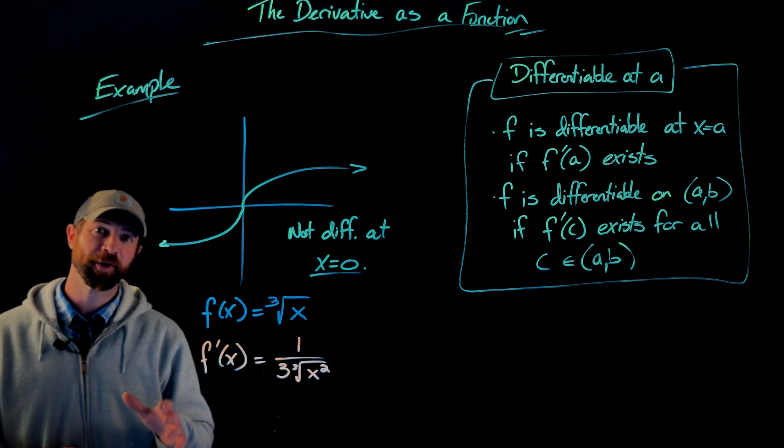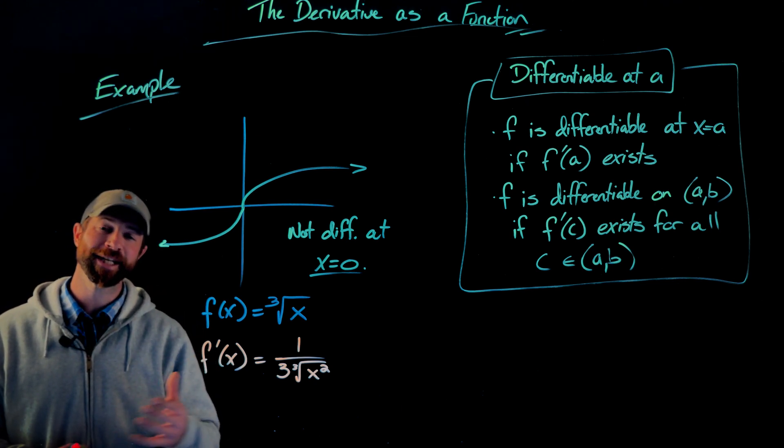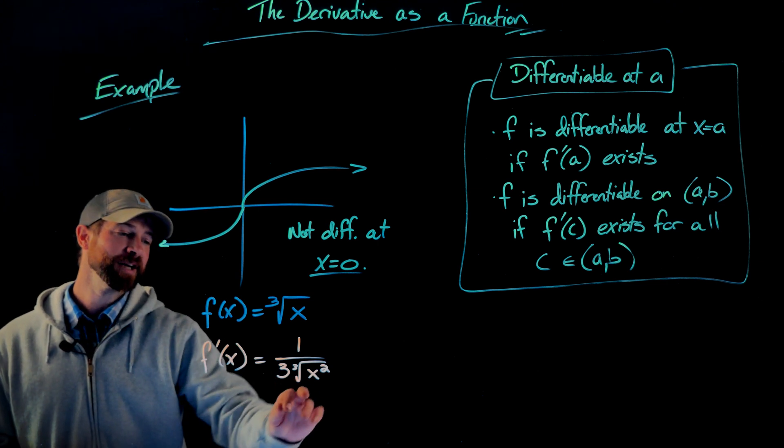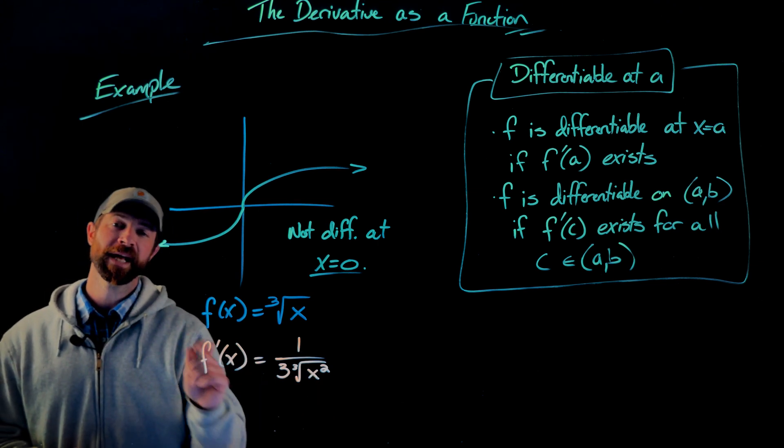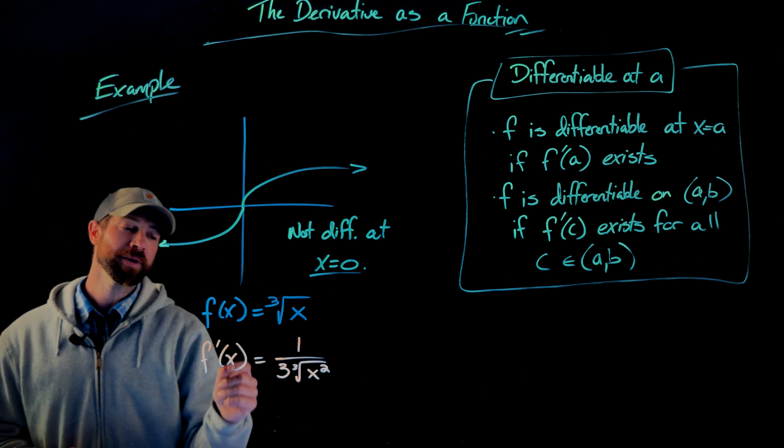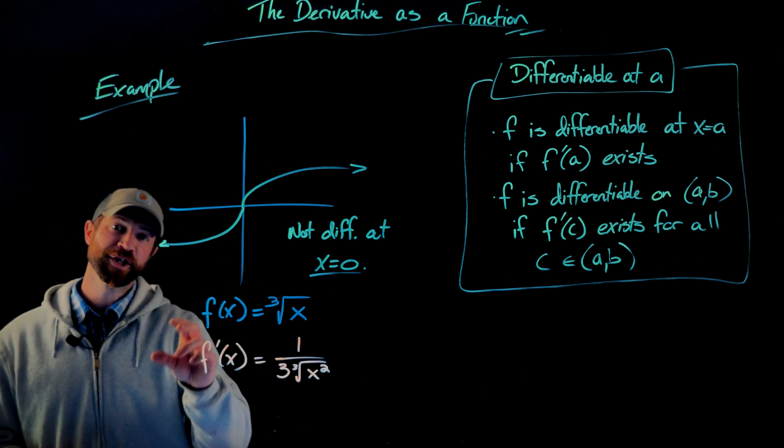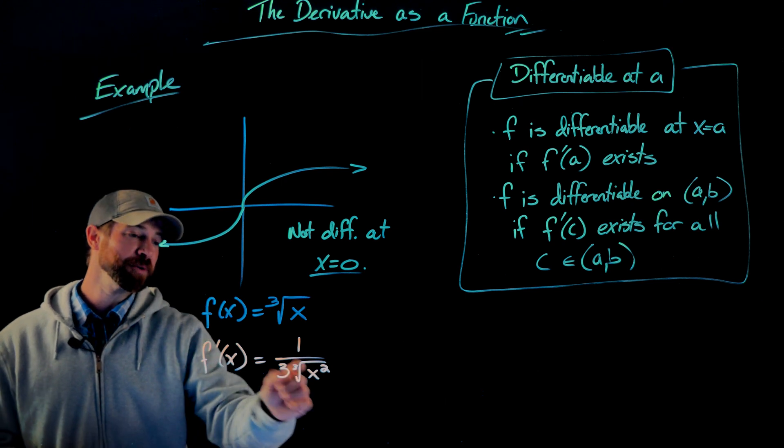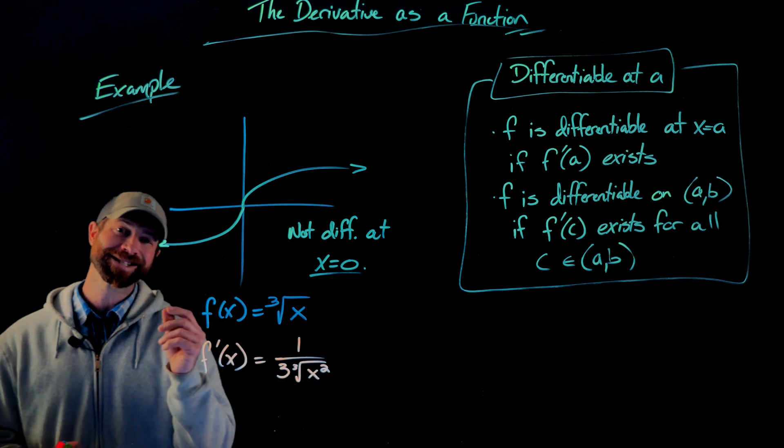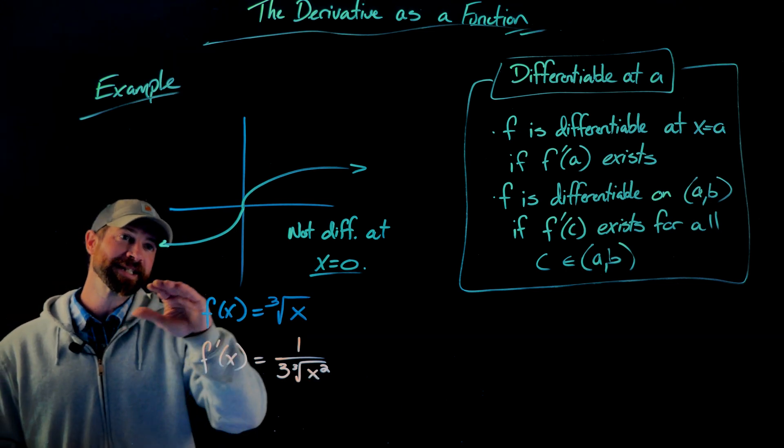One interesting thing to note before I move on from this example, and we'll be looking at this more and more often. If you look at this derivative function right here, because of this x squaring, that ensures outside of the issue at x equals zero that the slope of this function is always positive, right? Because when you plug even a negative number into this, there's no way you can output a negative because the x gets squared first.